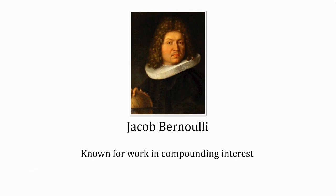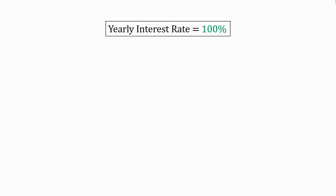The story of e goes back to Jacob Bernoulli in the late 17th century, who was interested in compounding interest. So let's say that we have an interest rate of 100% every year. While this may seem unrealistic for banks, it's not uncommon in nature. For instance, population growth can have a doubling factor of 100% since organisms literally double in number.